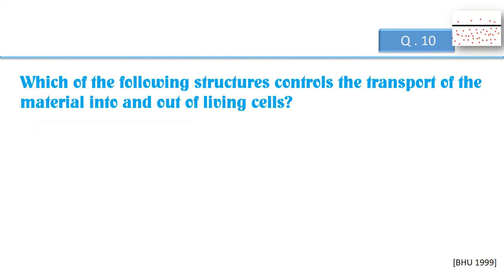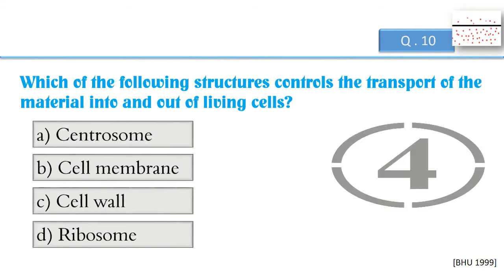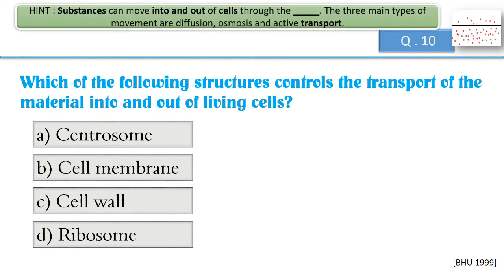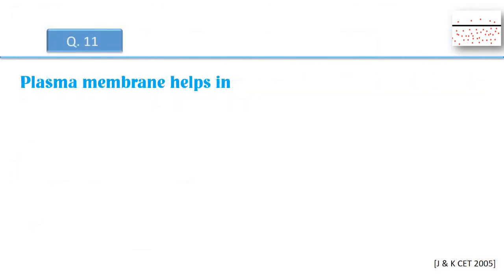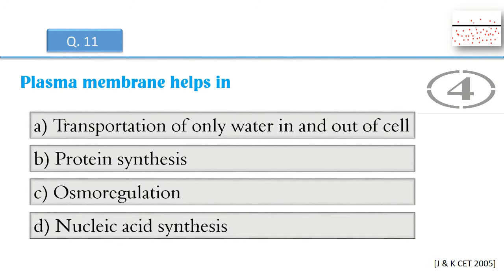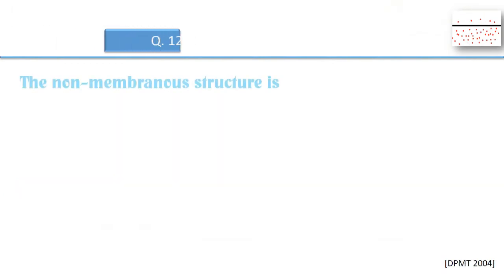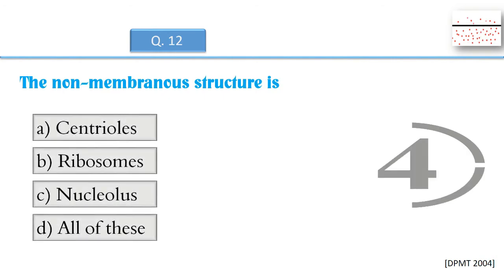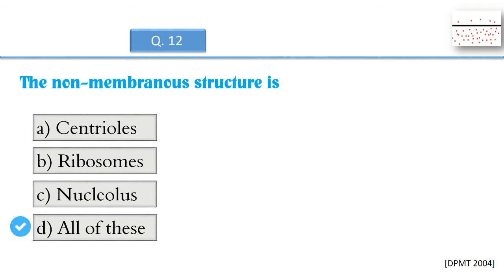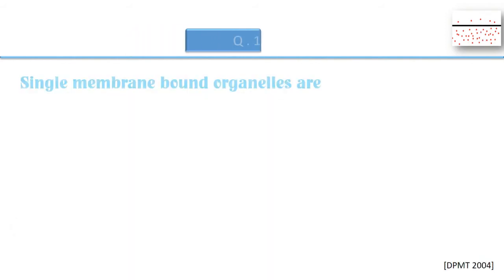Which of the following structures controls the transport of material into and out of living cells? Plasma membrane helps in? The non-membranous structure is?